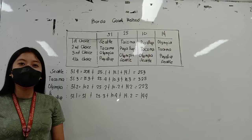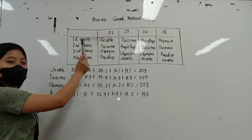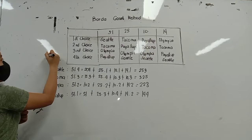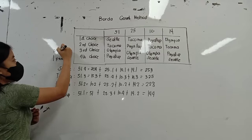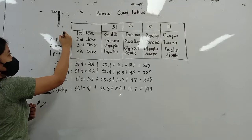Now let's solve the problem. The fourth choice gets one point, the third choice gets two points, the second choice gets three points, and the first choice gets four points. In this method, we multiply the number of votes by the number of points.